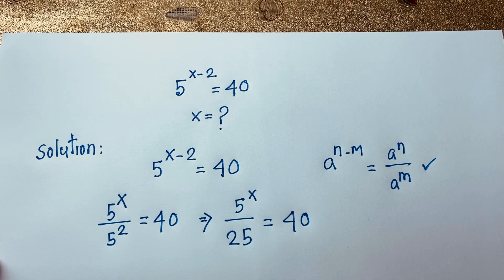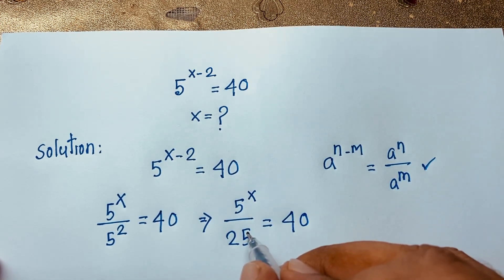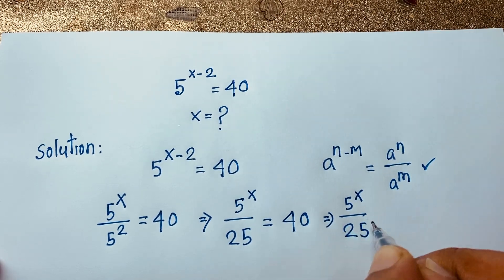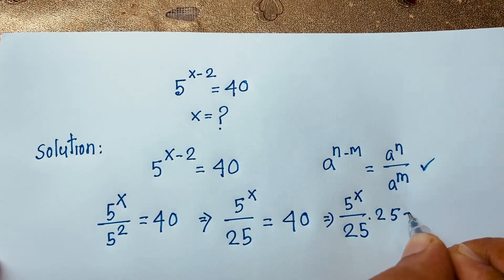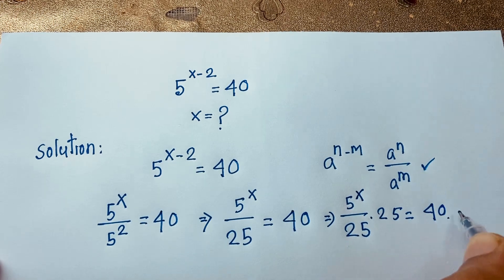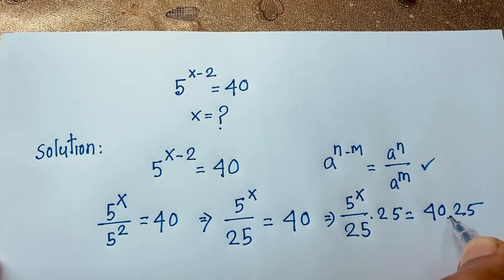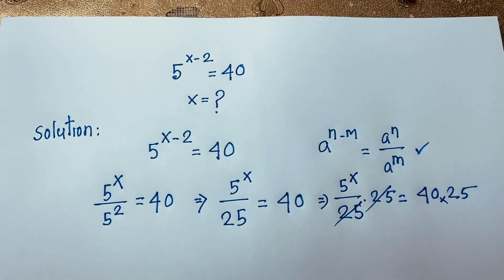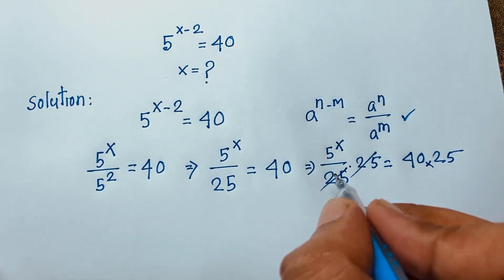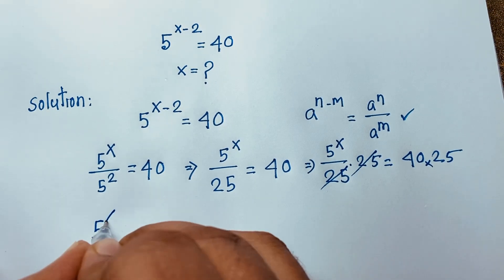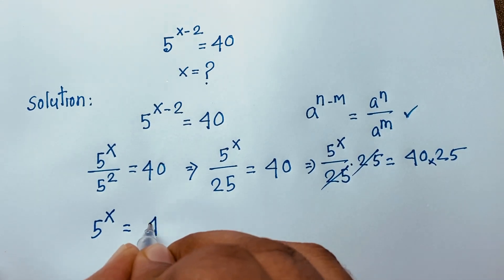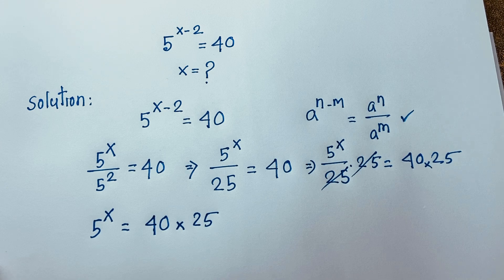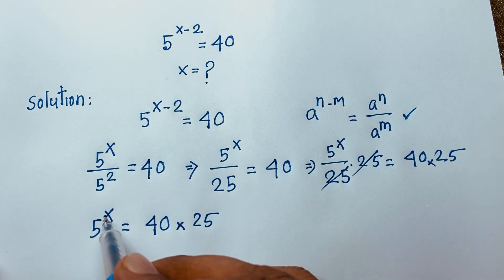Now if I multiply both sides by 25, we get 5 to the power x over 25 times 25 is equal to 40 times 25. The 25s cancel out, and we find that 5 to the power x is equal to 40 times 25.